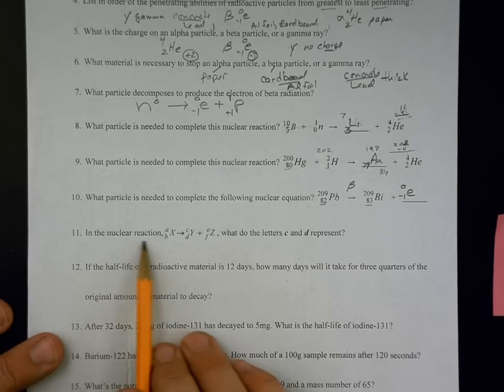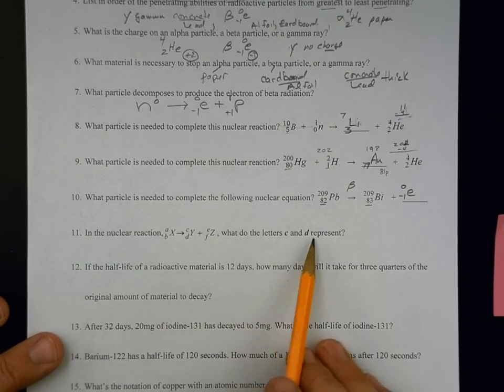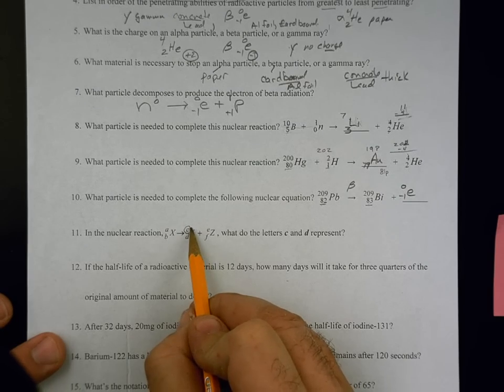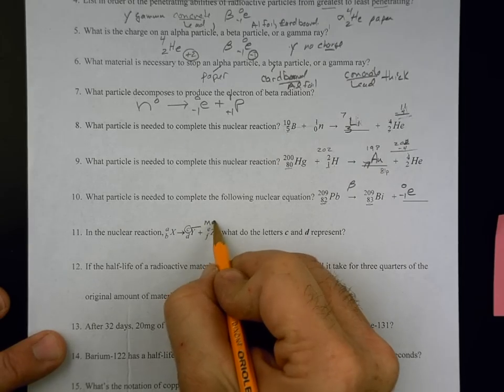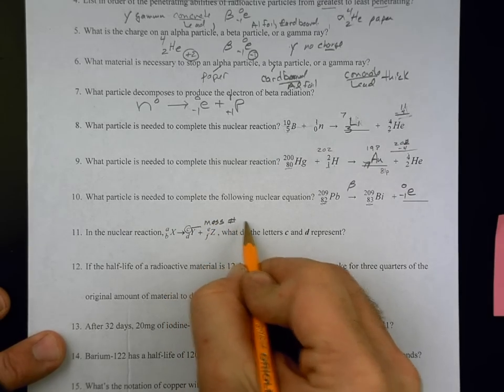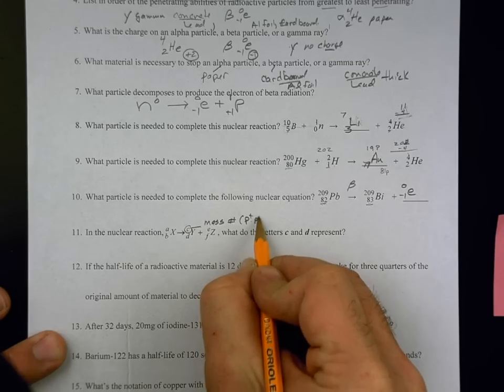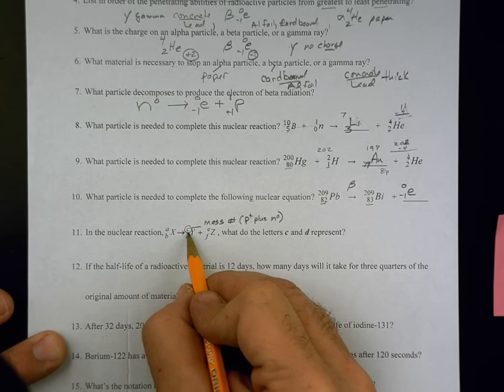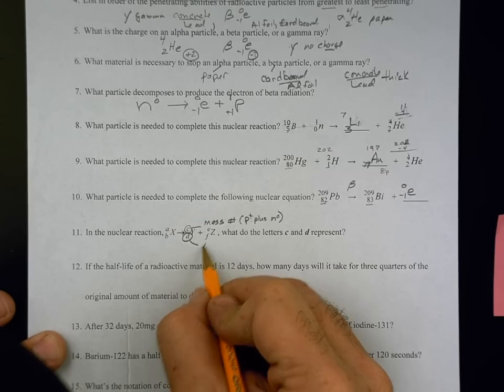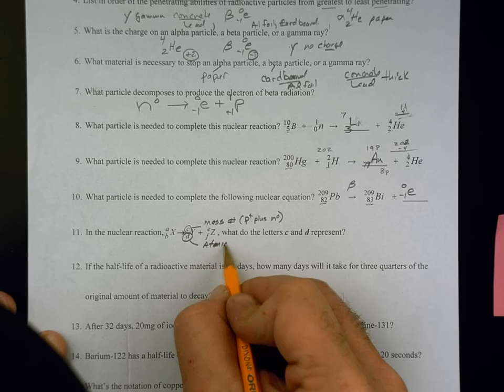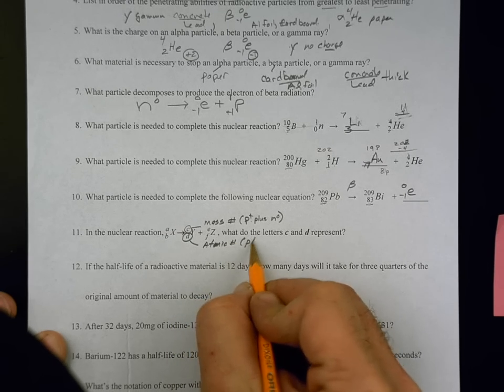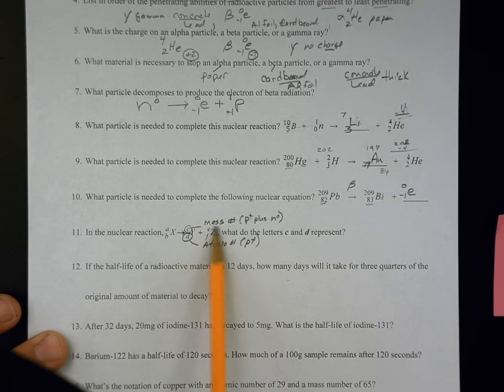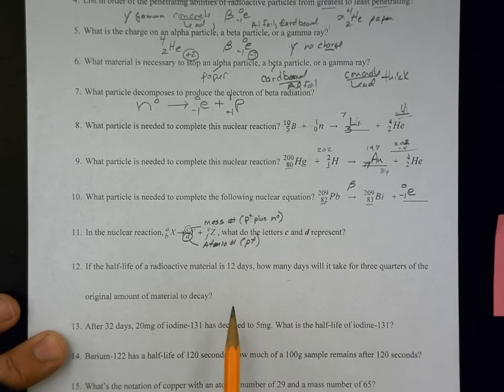In this nuclear reaction, what do letters C and D represent? C is going to represent the mass number, which is protons plus neutrons in the nucleus. This tells you the mass of the element. D here is representing the atomic number, which is just the number of protons. So if you get asked how many neutrons, you take the mass number and you subtract the atomic number, and that'll tell you how many neutrons.